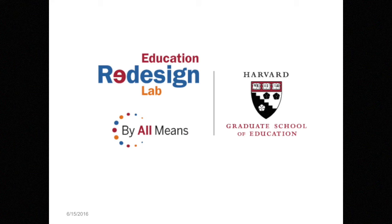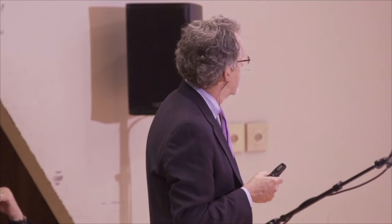Tom mentioned the Education Redesign Lab. Our theory of action is that education reform has been nowhere near effective enough to get us close to all means all, because the data show substantial gaps in student achievement in spite of many reforms. It isn't that those reforms weren't worthwhile — we believe they were necessary, but they aren't sufficient to get the job done. For example, improving the quality of teaching and using data more effectively to meet the needs of students is something worth doing, but it's not enough to get to all means all.